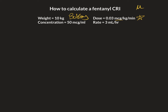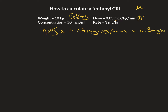So the first thing we need to do is figure out how many micrograms per minute our good friend Bobby needs. We know he weighs 10 kilos, so all we're going to do is multiply our dose of 0.03 micrograms per kilogram per minute times 10. Our kilograms will cross out and that will leave us with 0.3 micrograms per minute.